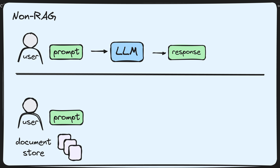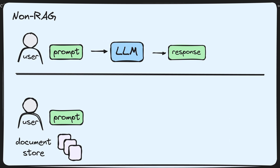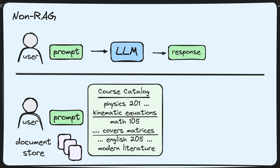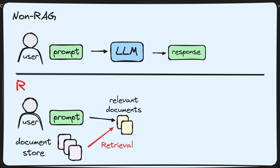For your application, the document store can really be anything. If you're building a chatbot for an online video game website where users can ask for a game that's fun, easy, and for the whole family, your document store might be a bunch of reviews of recent video games. Or if you're building a chatbot to help college students find a cool class to enroll in this semester, you might chunk the entire course catalog into sentences or paragraphs for your document store. And that's the first step — retrieval. We find the K most relevant documents in our store for the user's query, using K equals three here for simplicity, though that's something we can tune.